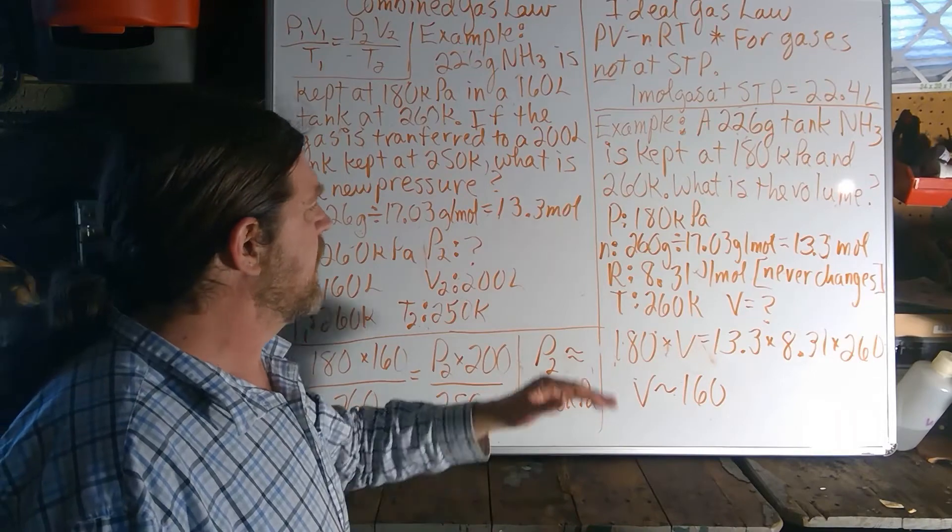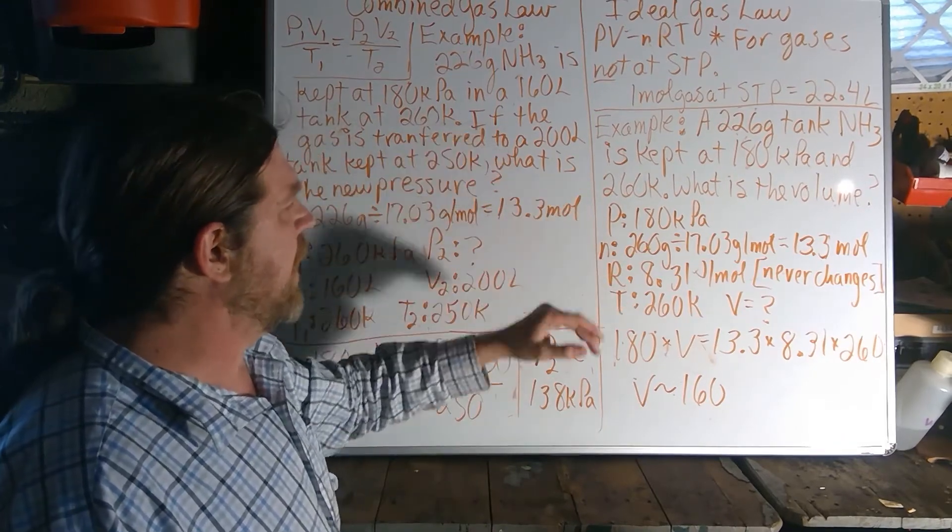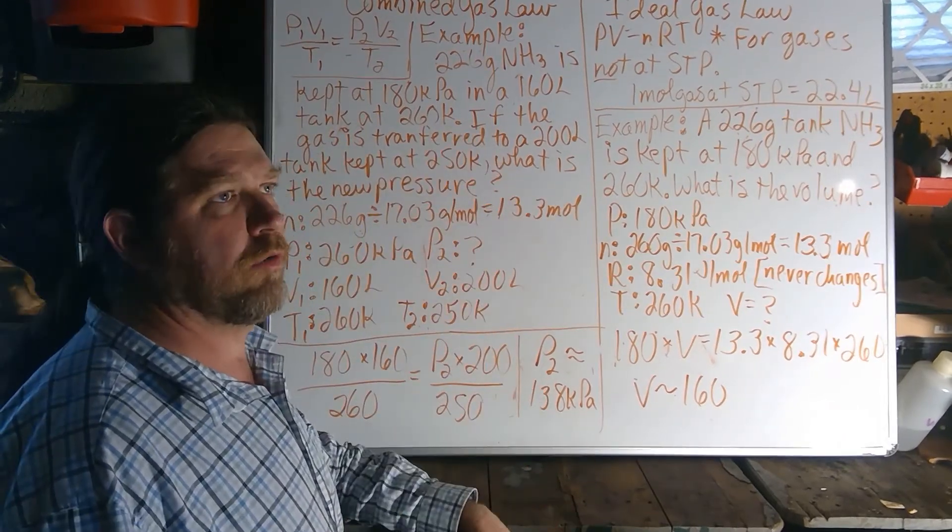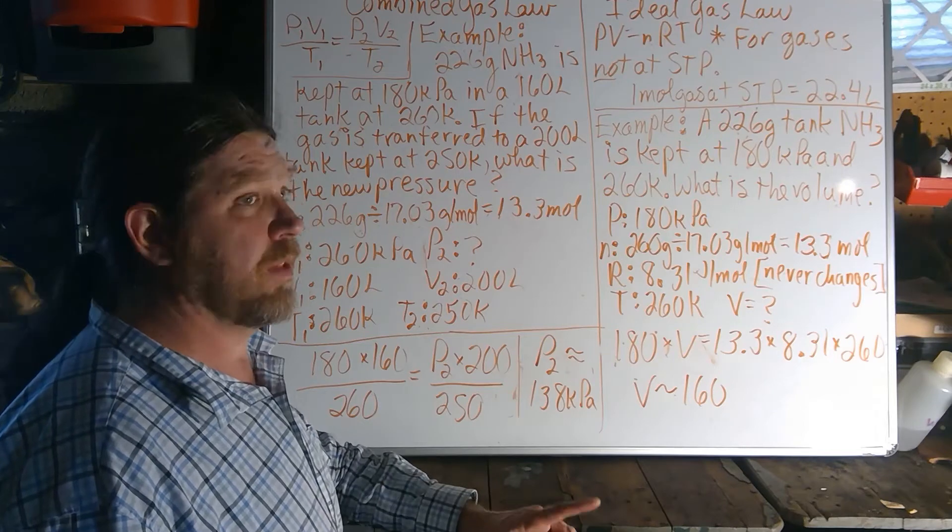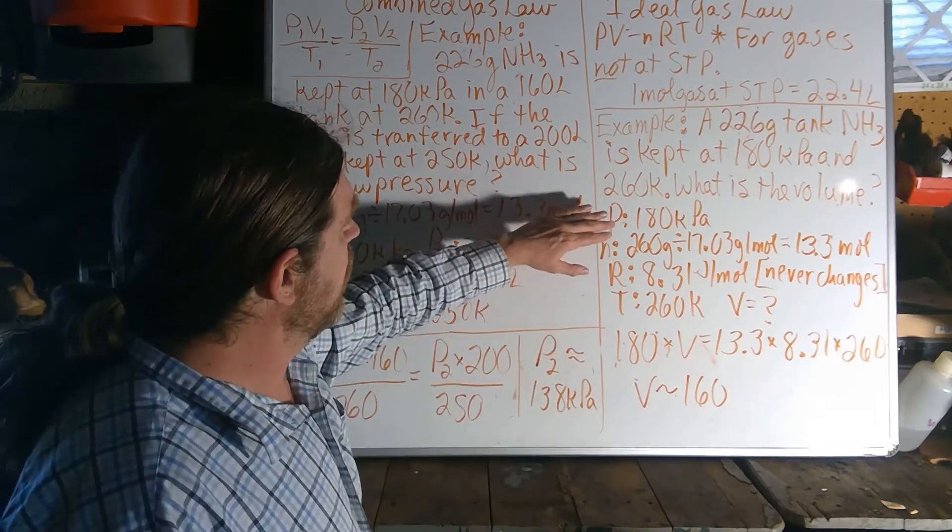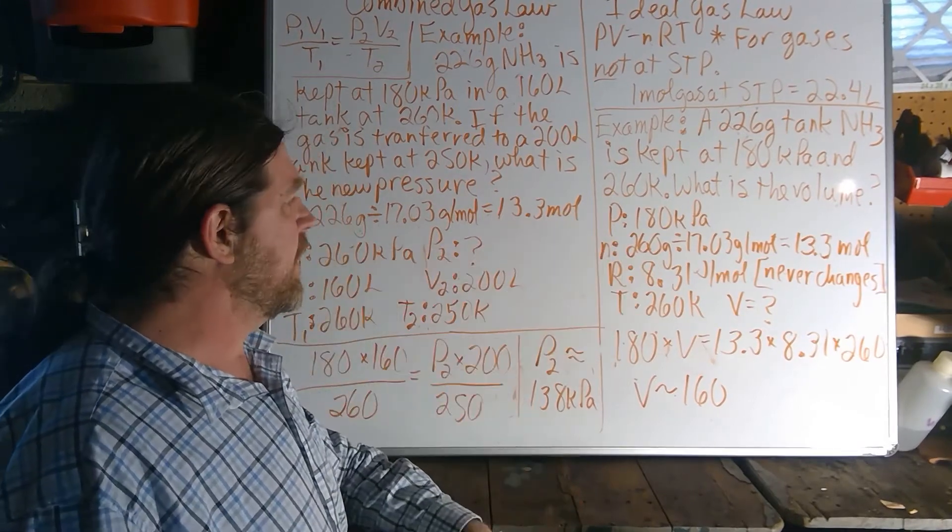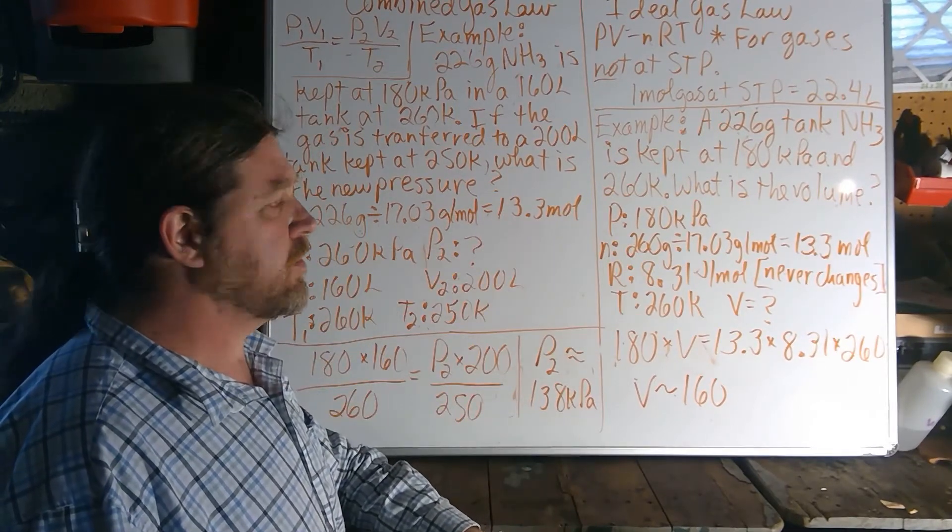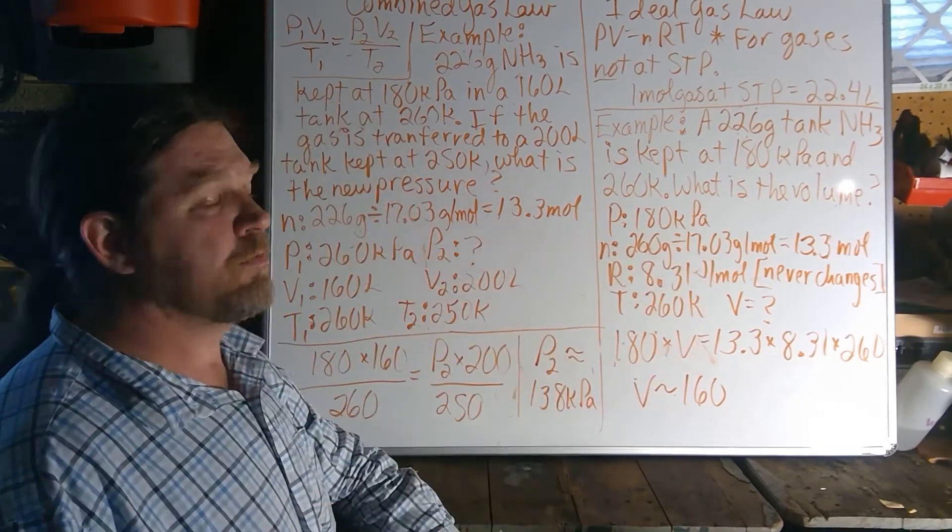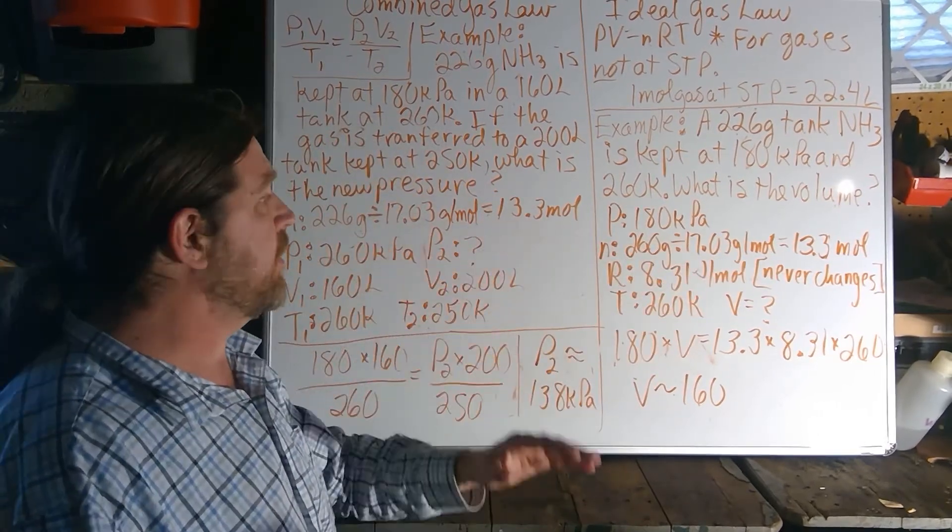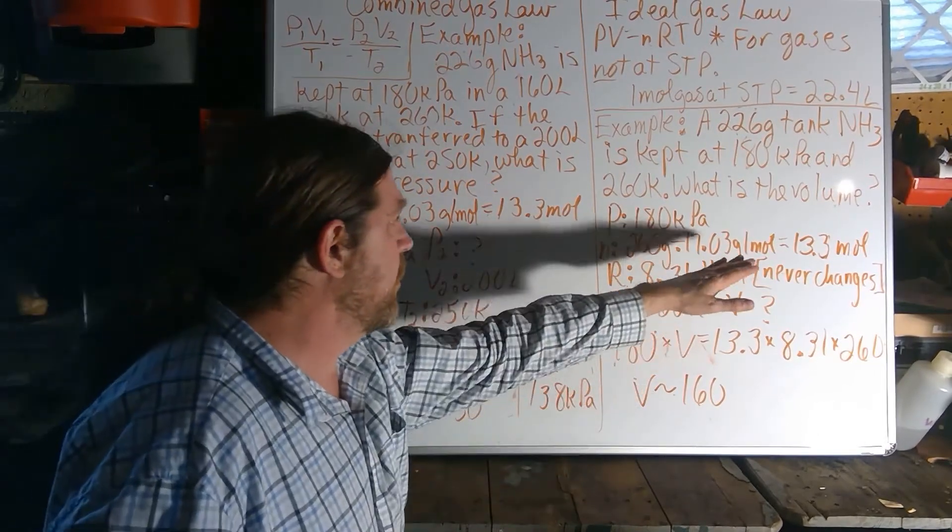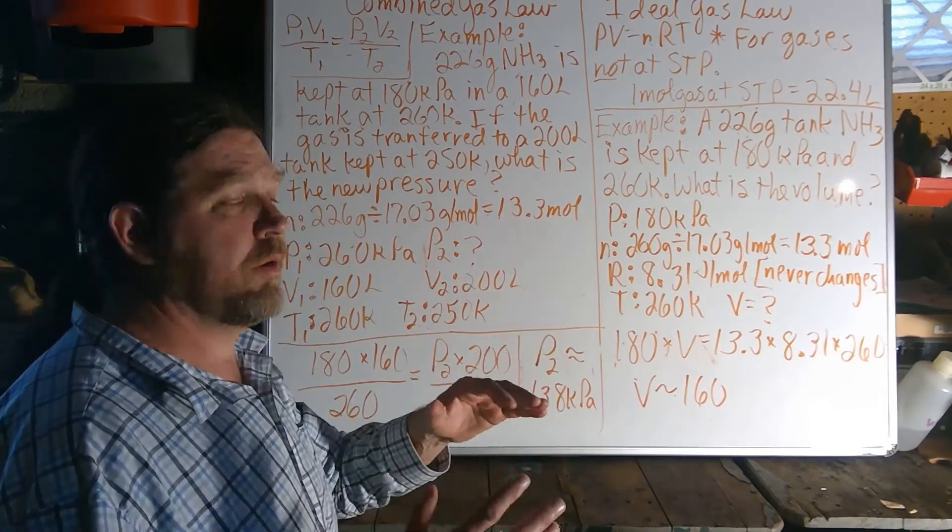So as always, do try to make that table list of your values. It's so critical for really not making mistakes like Mr. Munger does. So we have a pressure of 180 kilopascals, and we have a mass. We know by now that we can turn any mass into moles by dividing it by its molar mass. The molar mass of ammonia is 17.03 grams per mole for 13.3 moles.